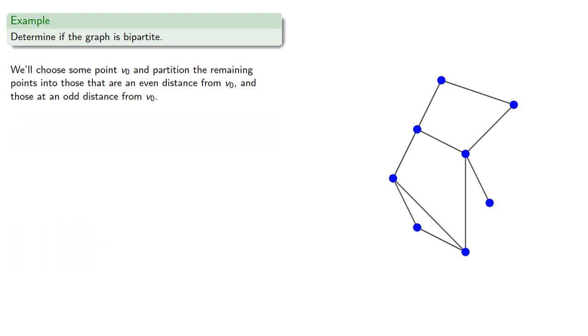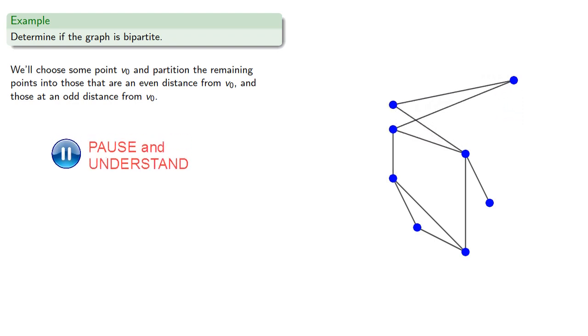So if we want to determine if a graph is bipartite, we'll choose some initial point and partition the remaining points into those that are an even distance away and those that are an odd distance away. So maybe we'll pick this point. Let's slide this point over to one side. The adjacent points are at distance 1, which is odd, so we'll slide those over to the other side.